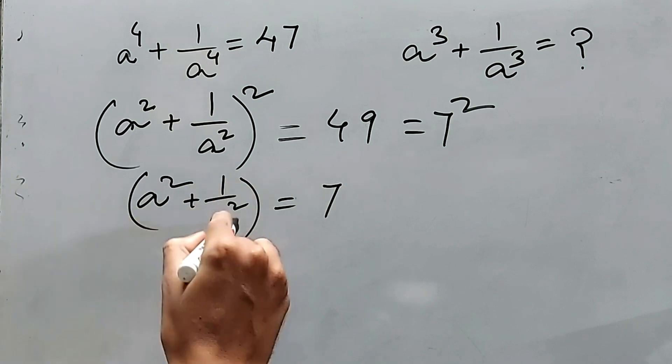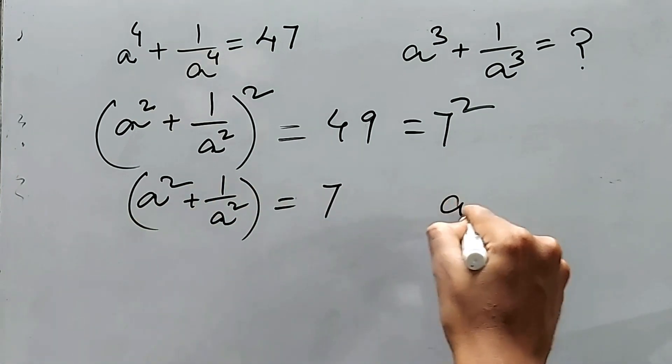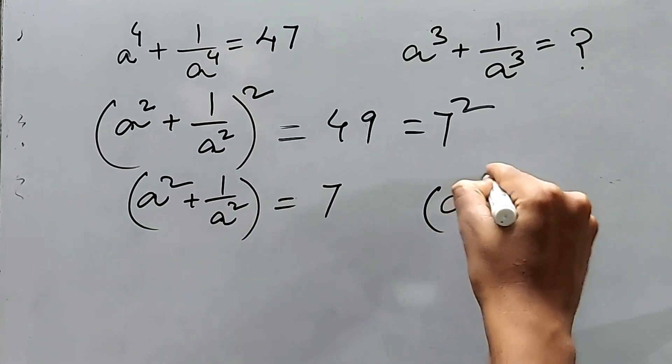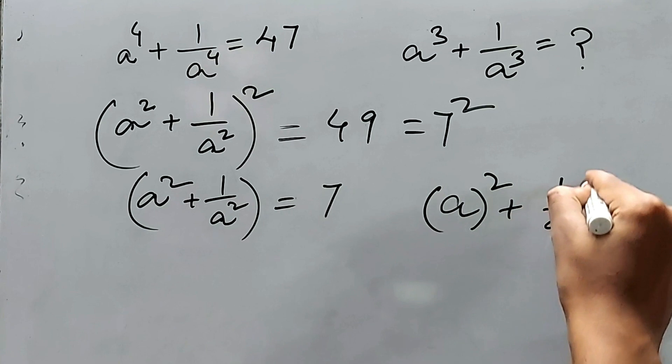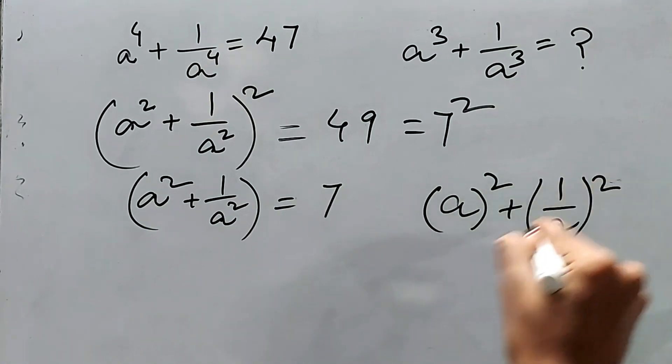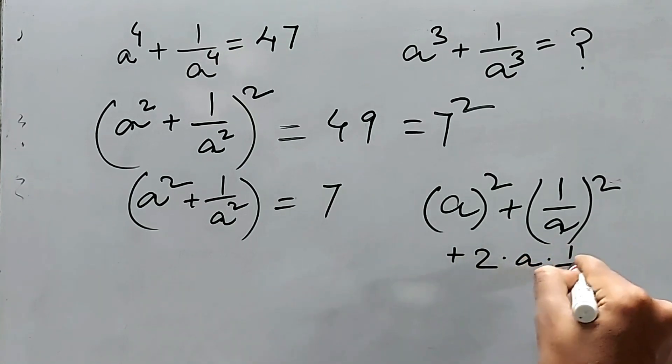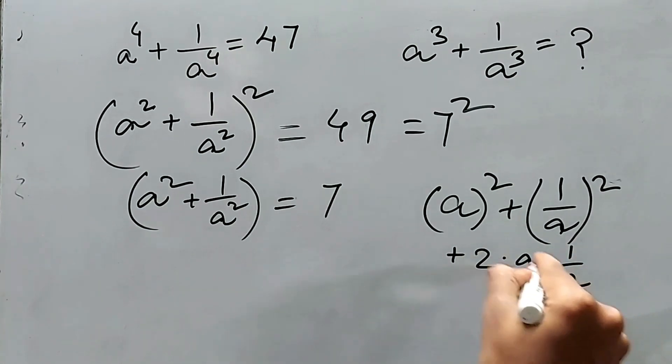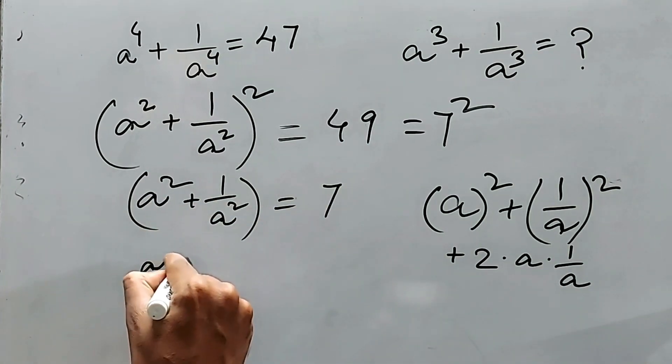2ab. Just add 2 on both sides. So we can write a^2 + a^2 + 2ab—that's 2 * a * 1/a, which means 2. Definitely we are adding 2 on both sides.